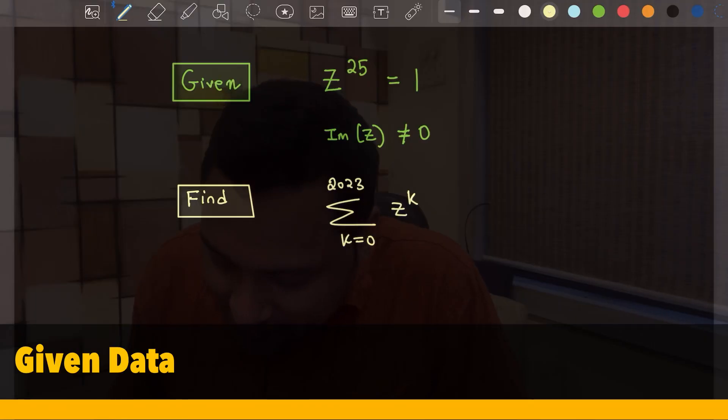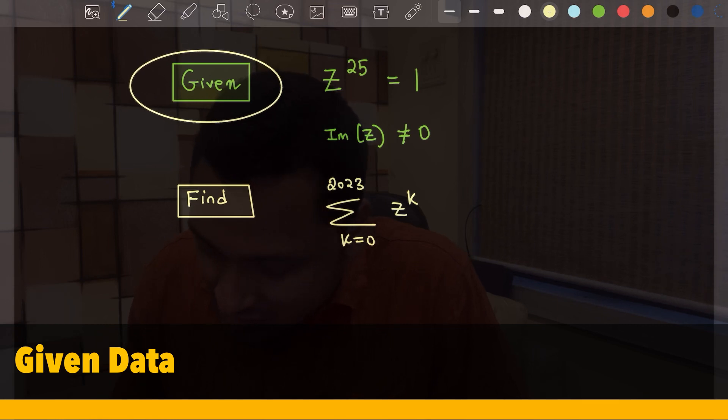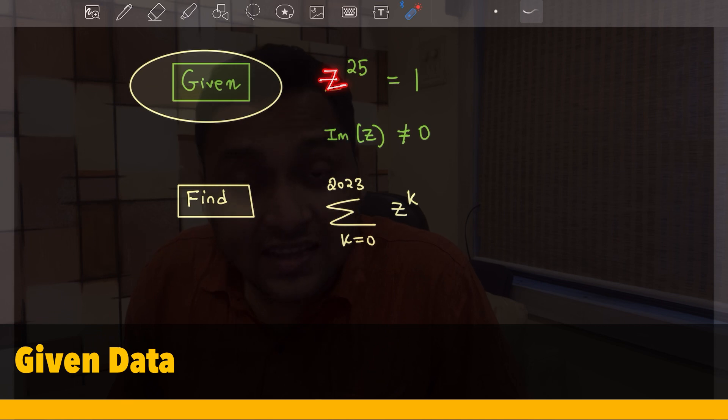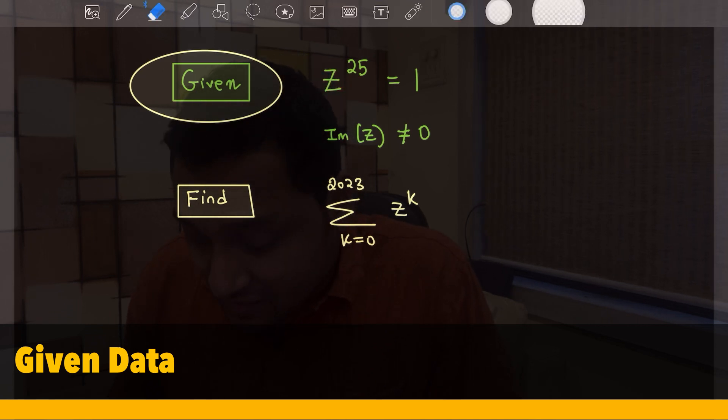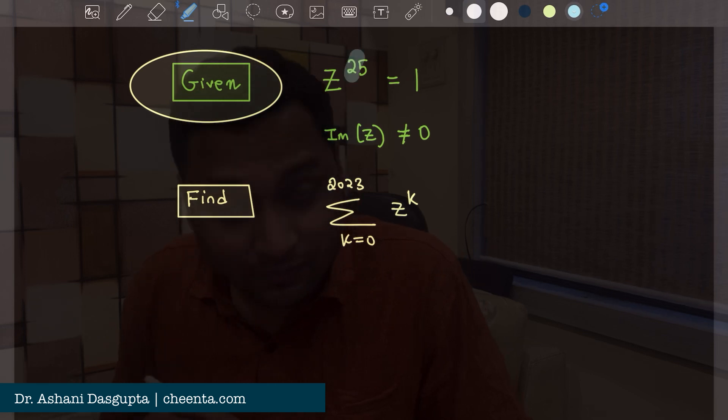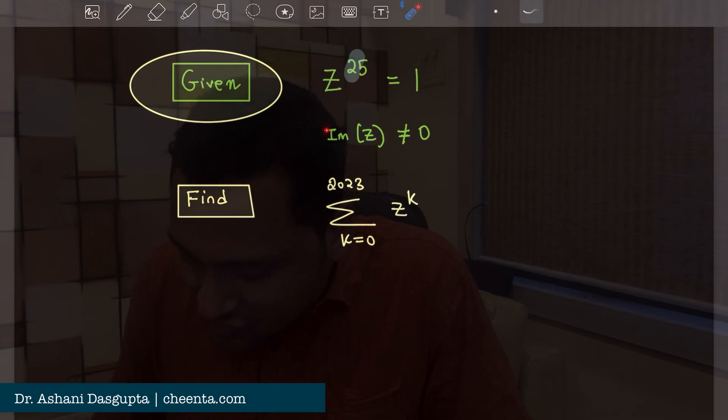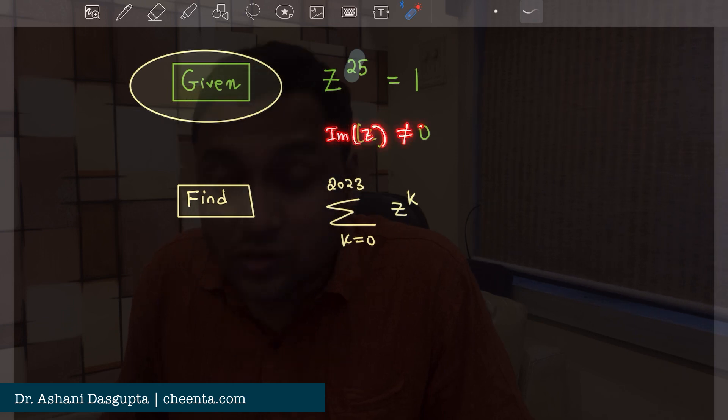The given data in this problem is there is a complex number z such that z to the power 25 is 1. And it's also given that the imaginary part of z is not equal to 0.